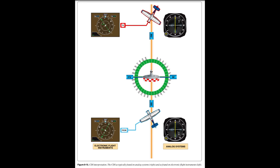CDI Interpretation. The CDI deviates from side to side as the aircraft passes over or nearly over the station because of the volume of space above the station where the zone of confusion exists. This zone of confusion is caused by lack of adequate signal directly above the station due to the radiation pattern of the station's antenna, and because the resultant of the opposing reference and variable signals is small and constantly changing.